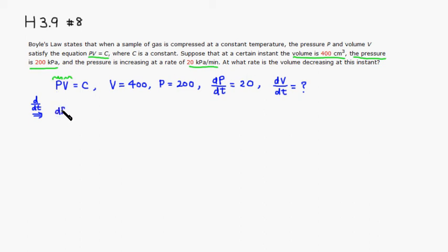Take the derivative of P, first guy with respect to t times the second guy, so it's going to be V, plus first guy is P times the derivative of the volume with respect to t. And the derivative of the right-hand side is going to be zero because C is a constant.